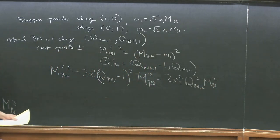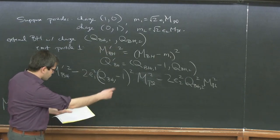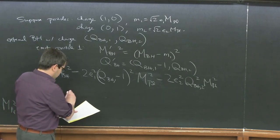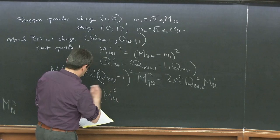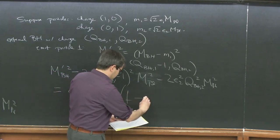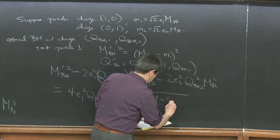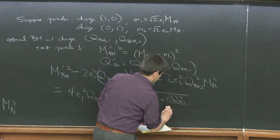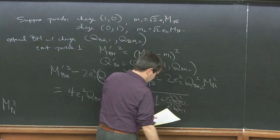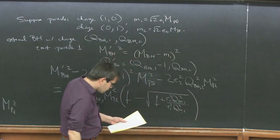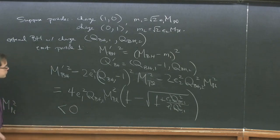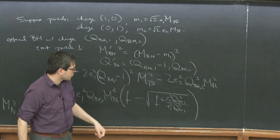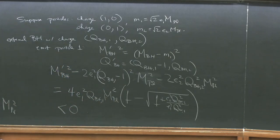We can work out what happens to the extremality bound after this emission. If I evaluate this quantity — is it positive or not — and expand out the square and subtract everything, what you find is that this quantity is negative. So this decay is not kinematically possible because the black hole, by emitting this particle, would turn into another black hole that isn't a good classical solution — it doesn't obey the extremality bound.